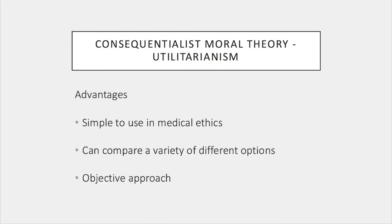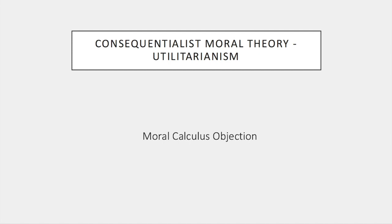So far, we have seen that utilitarianism can be quite a useful and objective tool for deciding the right and wrong action in moral terms. Now I want to turn our attention to some well-known objections to utilitarianism. Firstly, many critics claim that it's difficult to calculate how much happiness is produced in most circumstances. Furthermore, when an ethical dilemma arises in practice, we often do not have the time nor sufficient information to make an accurate assessment of this.